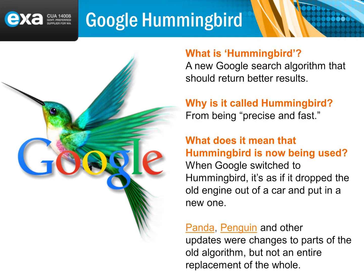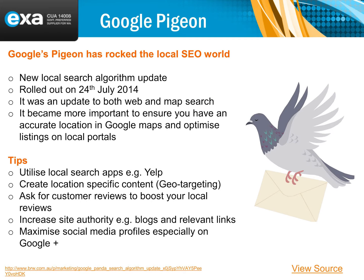Hummingbird wasn't so much an algorithm change — it's more a change in how Google works. Nowadays, people are searching differently; they're asking questions like 'How do I do this?' or 'What is this about?' — longer questions that really affect how search is done. Pigeon was really about local search, which is very relevant to you, as it's about making sure you have local content using local keywords and connecting with local sites.